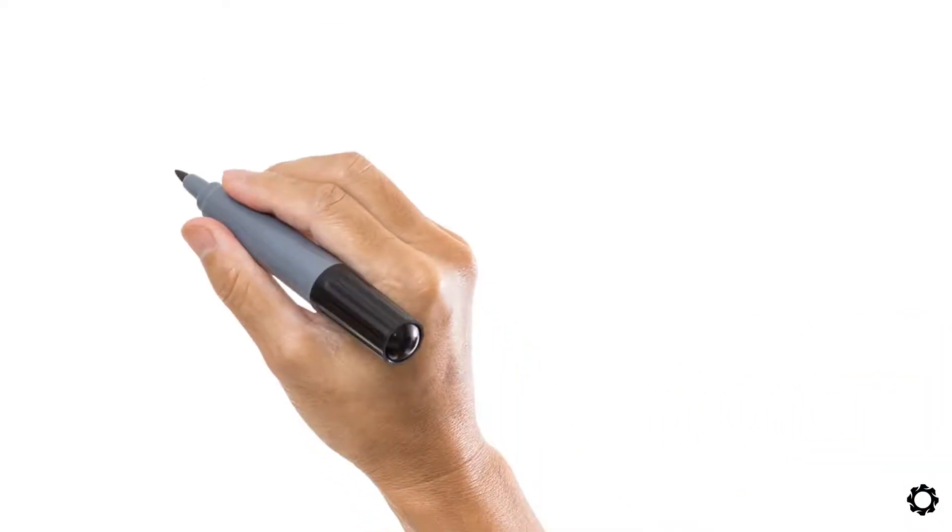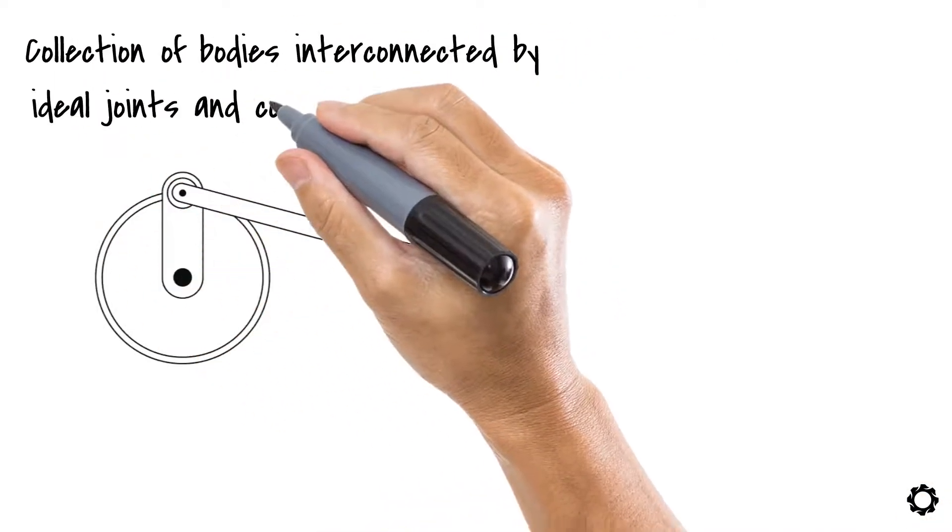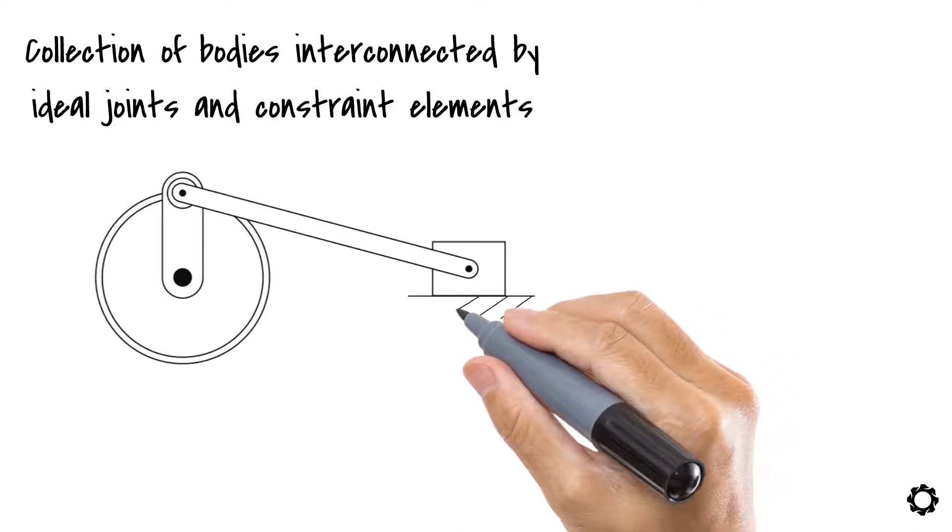In simple terms, a multibody system is a collection of bodies interconnected by ideal joints and constrained elements between them and the surrounding environment.